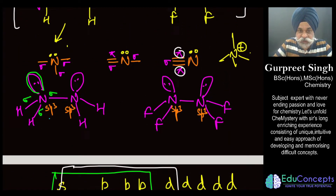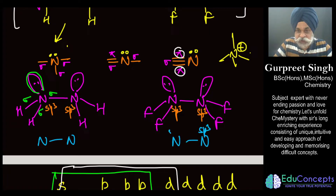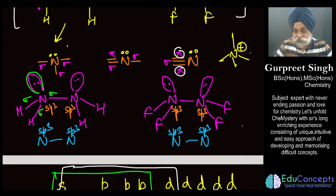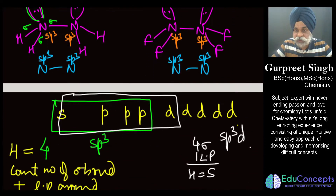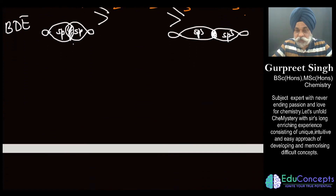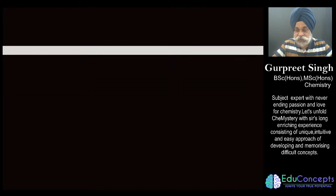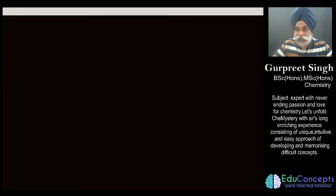In our problem, all nitrogen atoms are sp³ hybridized, so hybridization alone cannot distinguish the bond lengths. When we get stuck in a situation where hybridization does not allow us to take a call, the Bent Rule assists us in predicting the answer that also matches experimental results.